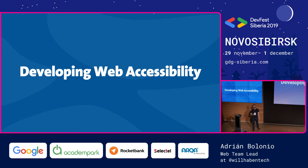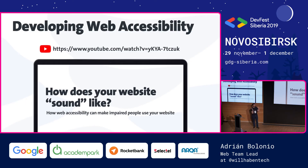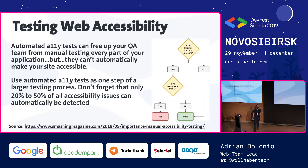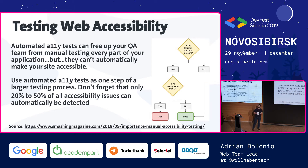Developing web accessibility — I'm not going to talk about that today. I did a talk about how to develop and best practices, and it's on YouTube. Today I'm going to talk about testing web accessibility. Automated tests can free up your QA team from testing every part of your application manually, but it's not magic — they cannot magically make your site accessible. Only 20 to 50% of issues can be found automatically, so we need to consider automated tests as part of the bigger testing process. Manual tests are equally important.